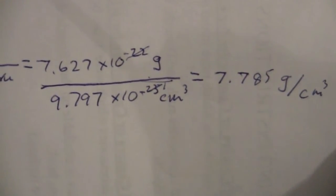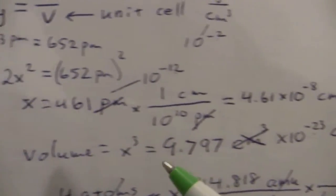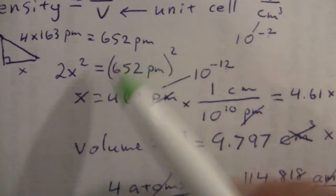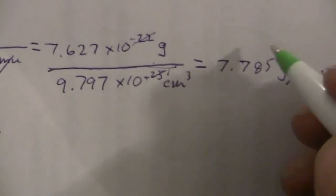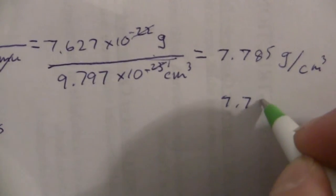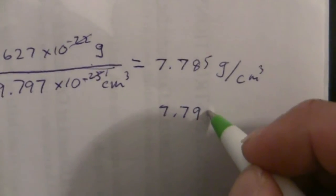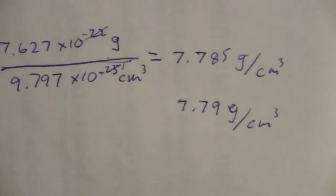So 7.785. Now if I look at my problem, I have three significant figures. I should go ahead and round that. I'll say 7.785 grams per cubic centimeter.